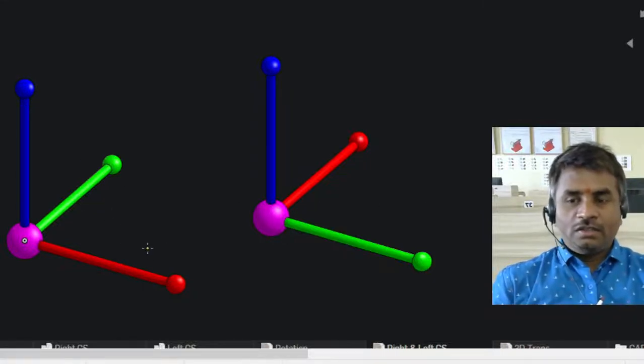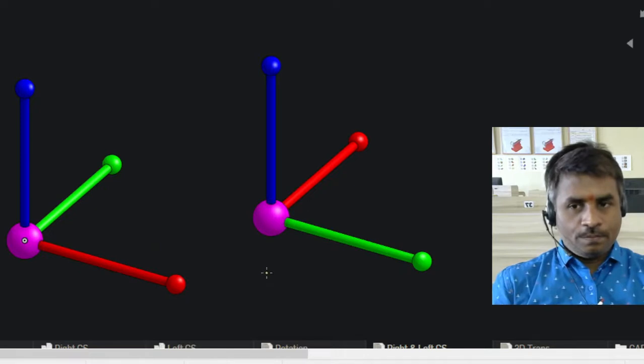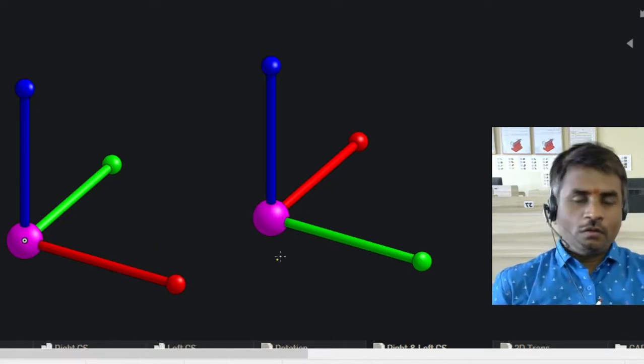To identify right-handed and left-handed coordinate systems, we use a law called the right-hand rule.